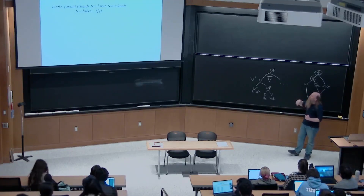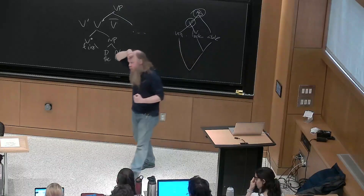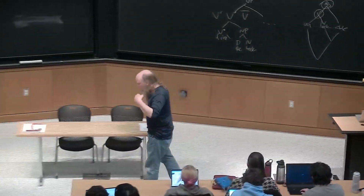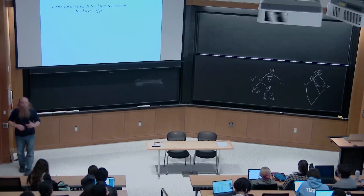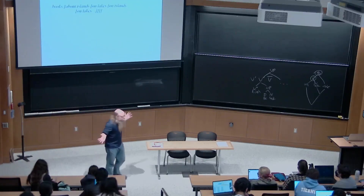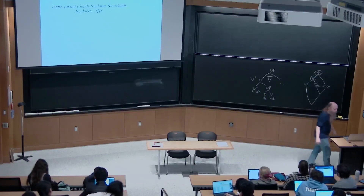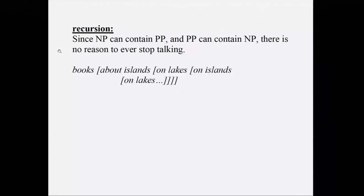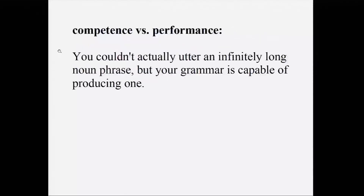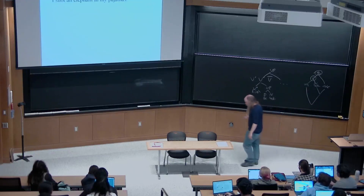This is another instance where we care about the competence/performance difference. Our theory makes it possible for noun phrases to be arbitrarily long. Nobody's ever going to utter an arbitrarily long noun phrase — but that's a fact about geography and life, not about grammar. We want a grammar that allows this even if people never exploit it fully.